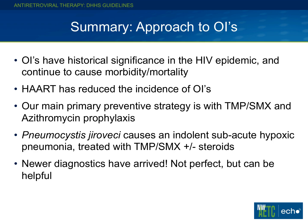In summary: OIs have historical significance — they ushered in the HIV epidemic and continue to cause morbidity and mortality, especially in people not engaged in care. HIV therapy has reduced the incidence of OIs. Our main preventive strategy remains Bactrim for PCP, toxo, salmonella, and bacterial pneumonias, and azithromycin prophylaxis for disseminated MAC. Pneumocystis is an indolent subacute hypoxic pneumonia, still causing significant disease in people not engaged in care. Best treatment is Bactrim and steroids for moderate to severe disease. Beta-D-glucan is a new diagnostic tool — not perfect, but useful in certain circumstances.